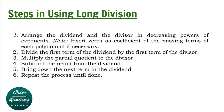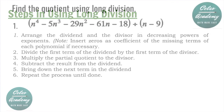Step 3: Multiply the partial quotient by the divisor. Step 4: Subtract the result from the dividend. Step 5: Bring down the next term in the dividend, and repeat the process until done.